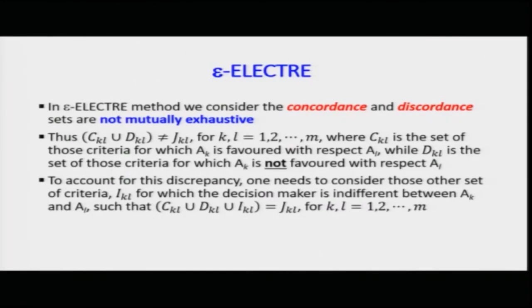In the standard ELECTRA concordance and discordance sets, the alternatives are clubbed either in the C set or in the D set. There was no case of indecision. Now we consider that they may not be mutually exclusive or exhaustive — meaning their union should technically equal the null set if they were exclusive, but we allow for an indecisive region.